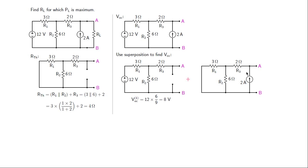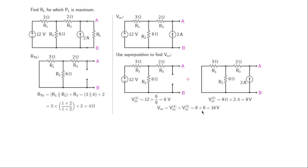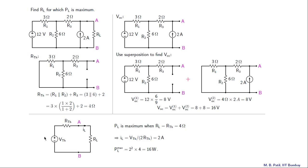In case two, we keep the 2 amp source and short the 12 volt source. The equivalent resistance seen by the source is four ohms (the same as Rth). The open-circuit voltage is two amperes times four ohms, which is eight volts. The net Thevenin voltage is Voc from case one plus Voc from case two, that is eight plus eight, or sixteen volts.